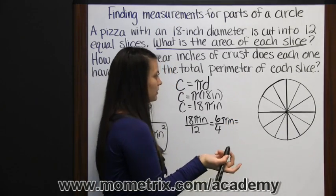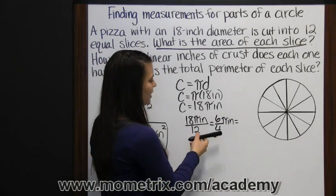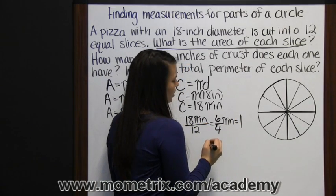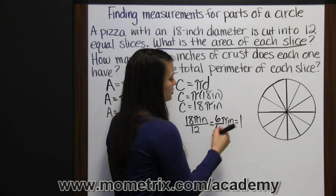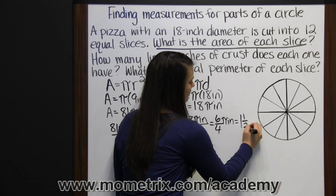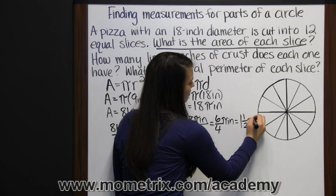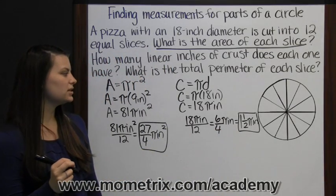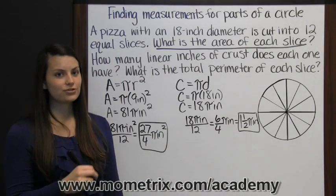Or we could keep simplifying that. Or we can say 4 goes into 6 one time with 2 left over. 2 out of 4 or 1 half. So it's 1 and 1 half pi inches. 1 and 1 half pi inches of crust for each slice of pizza.